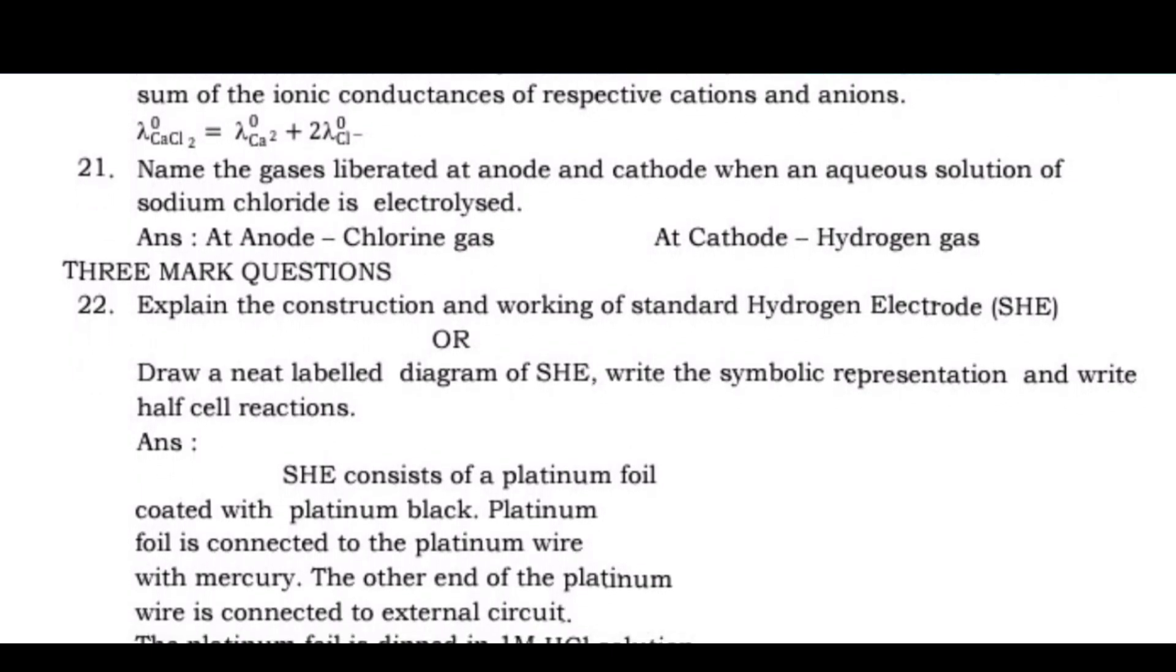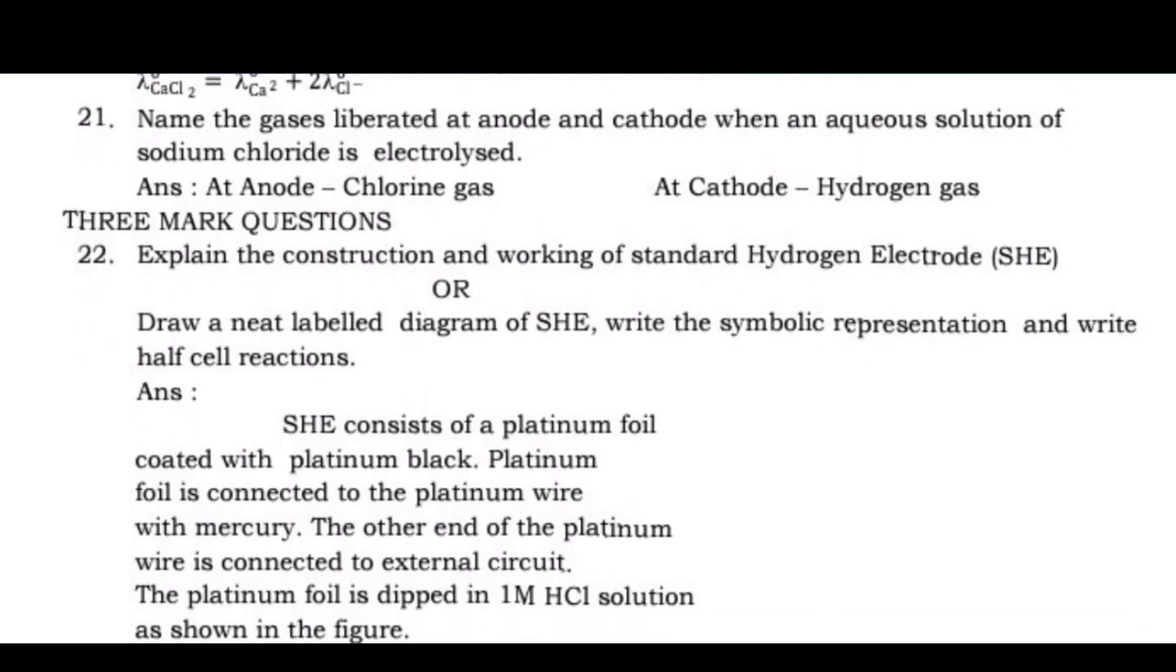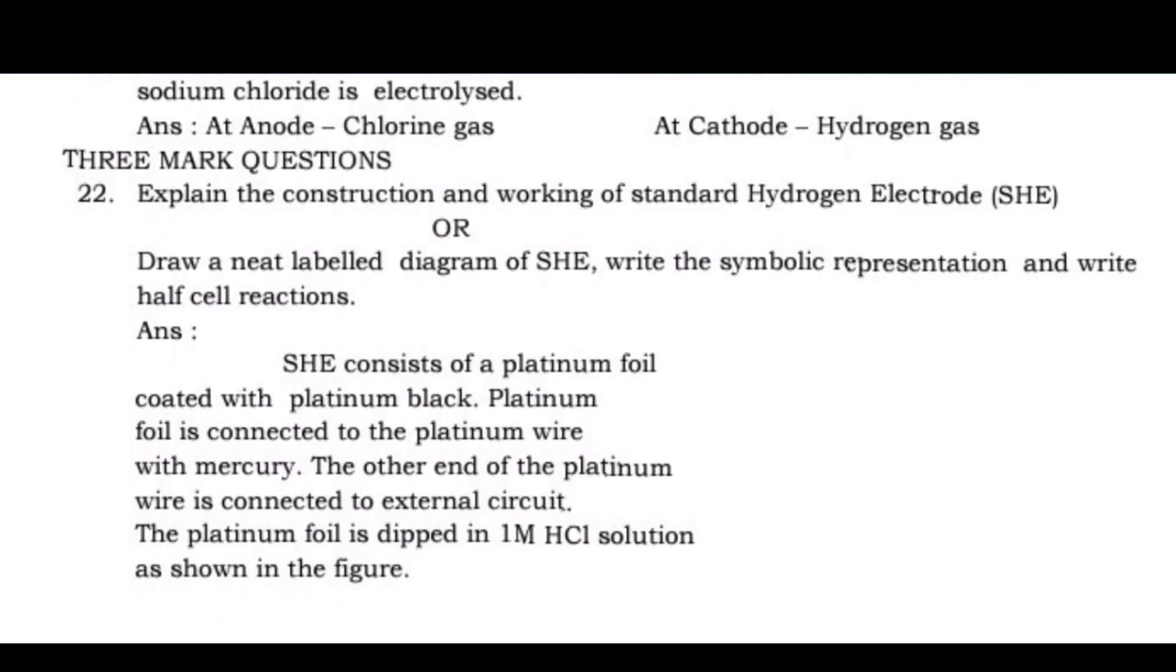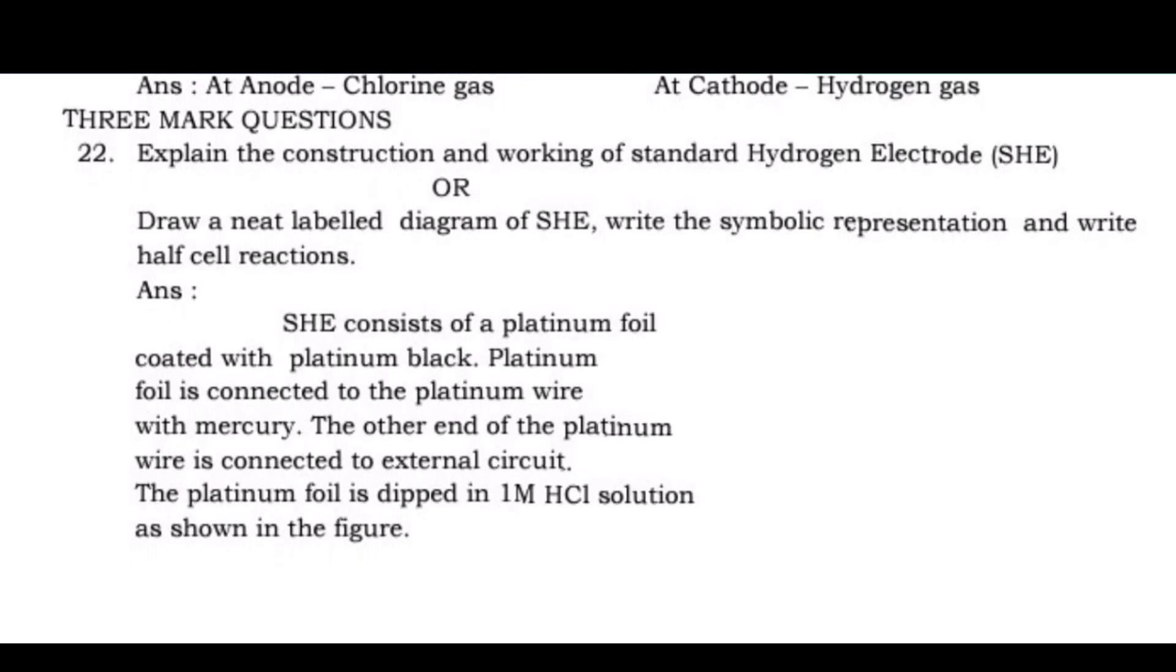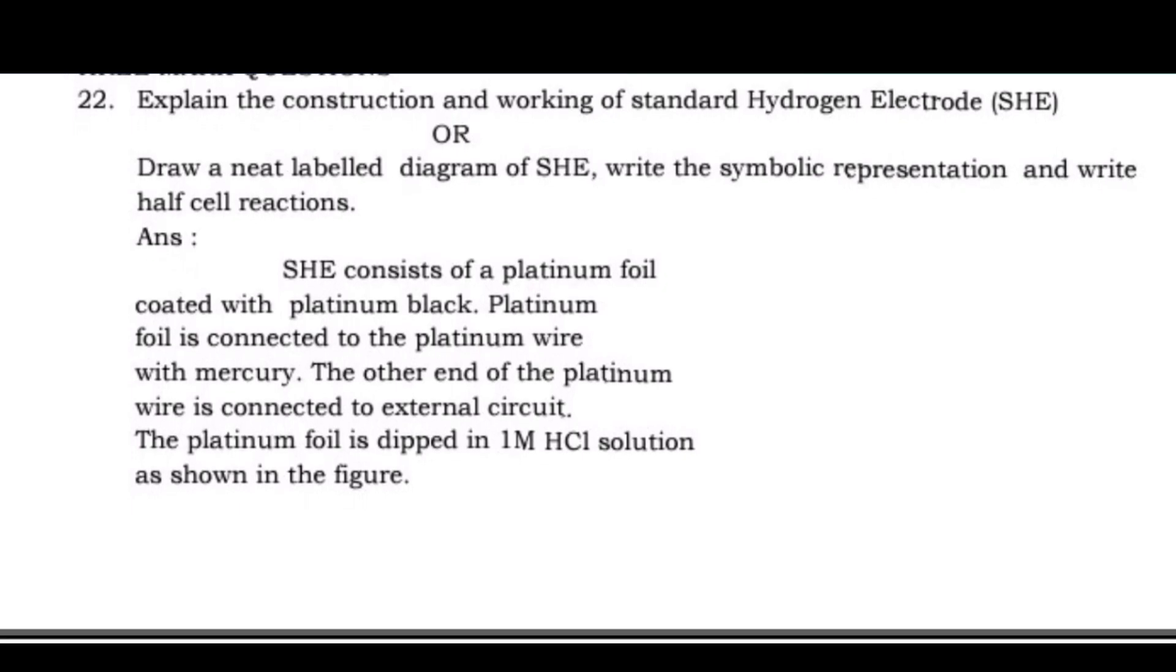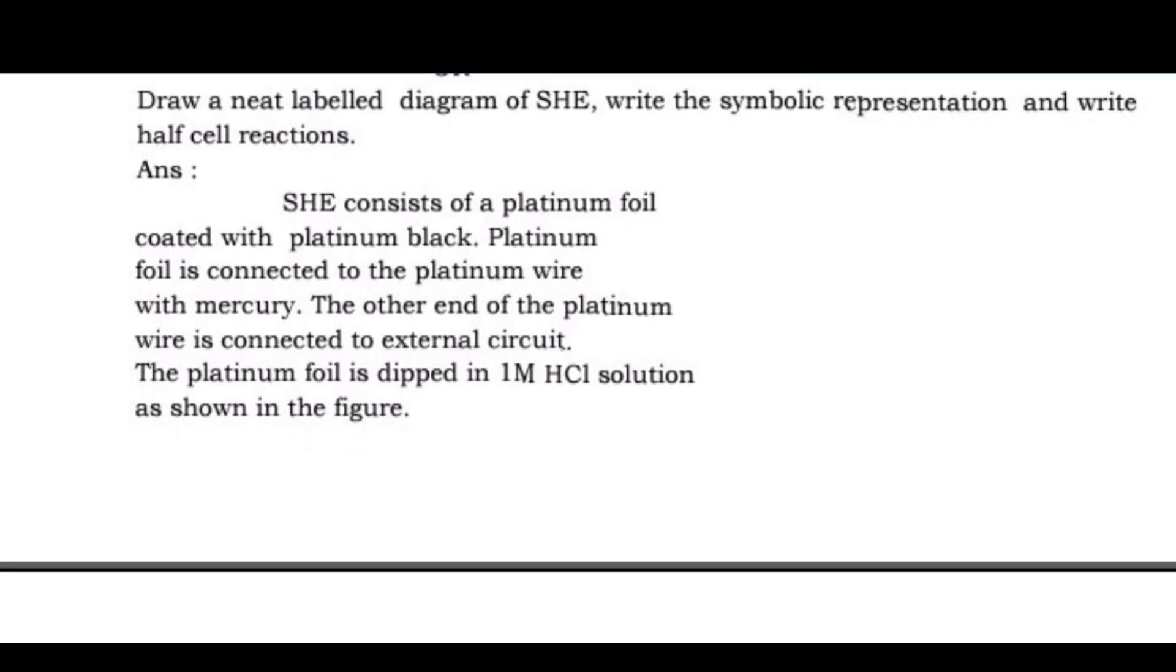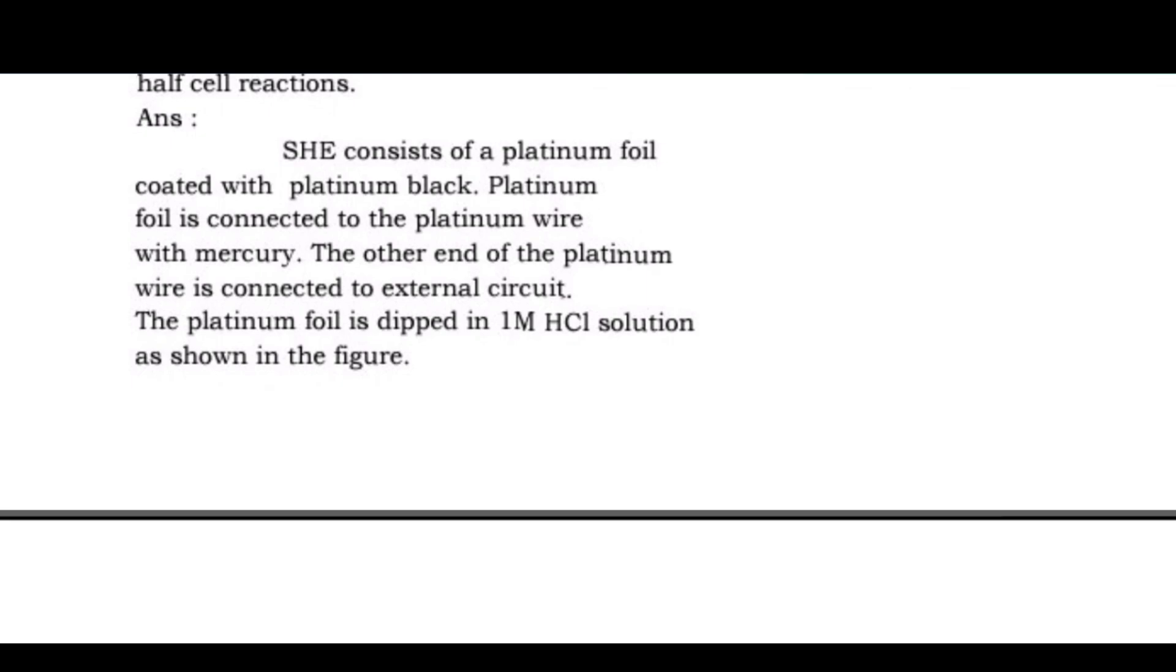Three mark questions. Question 22: Explain the construction and working of standard hydrogen electrode (SHE) or draw a neat labeled diagram of SHE, write the symbolic representation and write half cell reactions. Answer: SHE consists of a platinum foil coated with platinum black. Platinum foil is connected to the platinum wire with mercury. The other end of the platinum wire is connected to external circuit. The platinum foil is dipped in 1M HCl solution as shown in the figure.